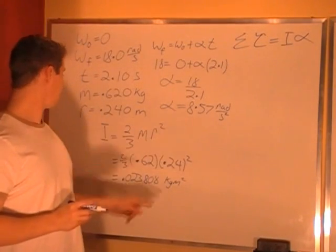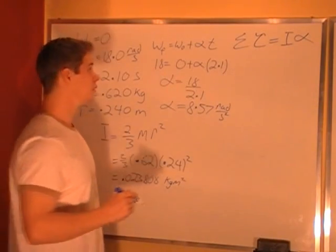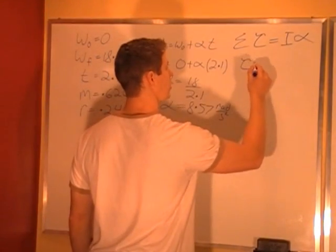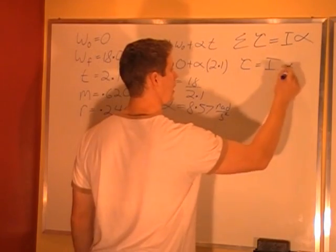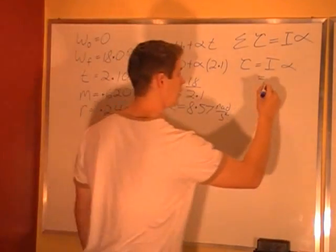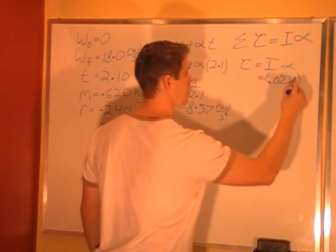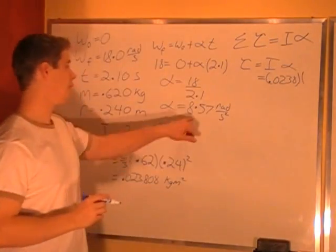Now we have alpha, we have I. Plug into the sum of our torques. There's one torque acting. Torque equals Iα equals I of 0.023808 and alpha 8.57.